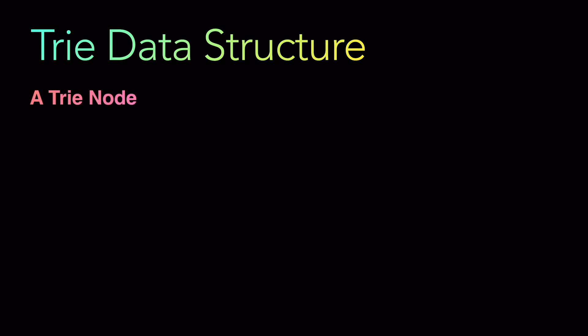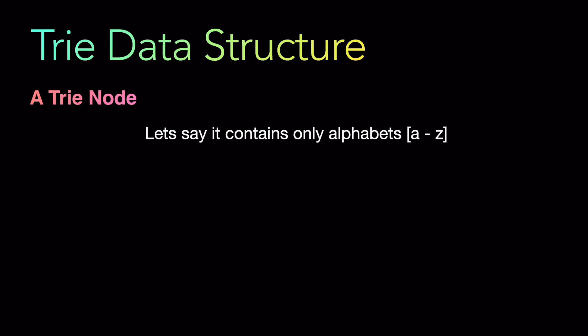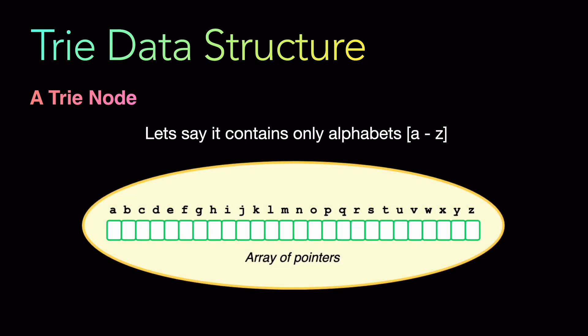When talking about strings, characters can be anything: case-sensitive a to z, 0 to 9 considered as characters, alphanumeric characters, or symbols. For simplicity, let's say our Trie data structure will only contain small alphabets a to z. A node in a Trie data structure has an array of pointers for each character being stored. Since we are storing a to z, we will have 26 array pointers, with each position representing a, b, c up to z.